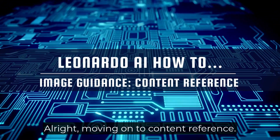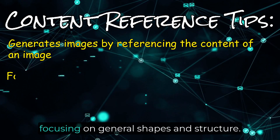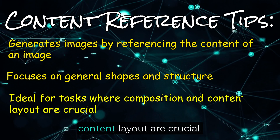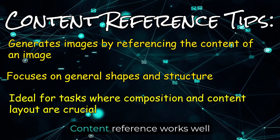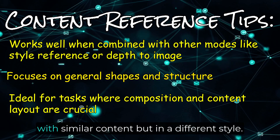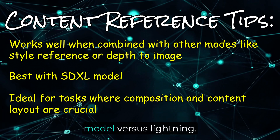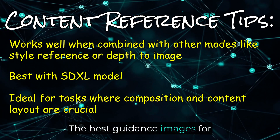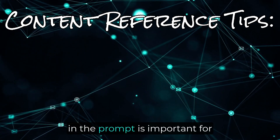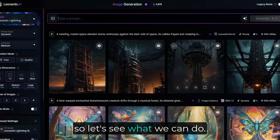Moving on to content reference. Content reference generates images by referencing the content of a reference image, focusing on general shapes and structure. This tool is ideal for tasks where the composition and content layout are crucial. It works well combined with other modes such as style reference or depth to image to produce images with similar content but in a different style. This is another tool that recommends using the SDXL model versus Lightning. The best guidance images are those with a clear and well-defined structure, and describing what you want in the prompt is important — random prompting will not work here.